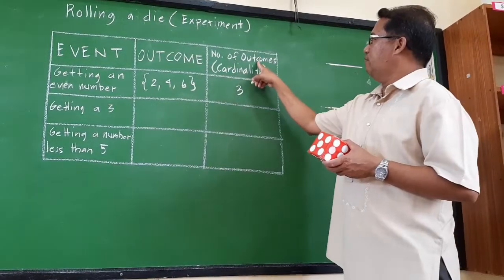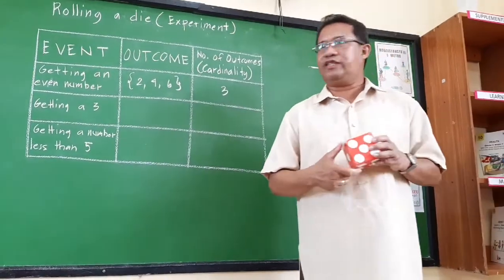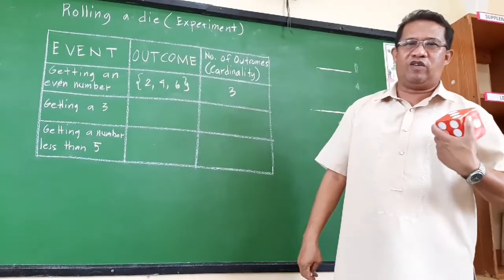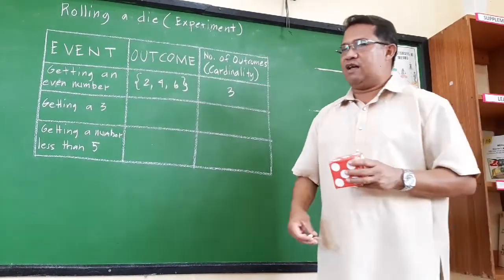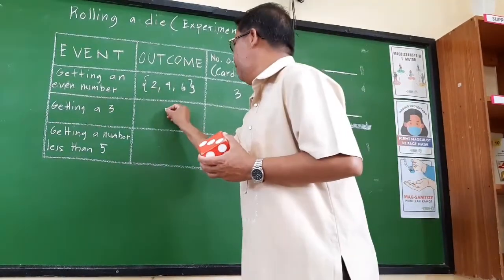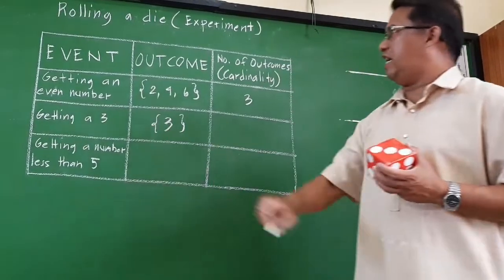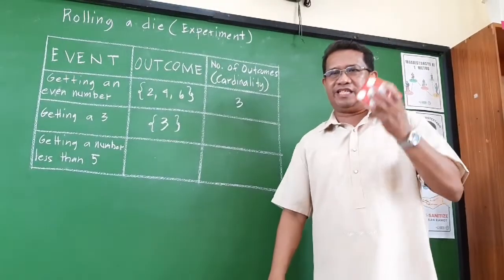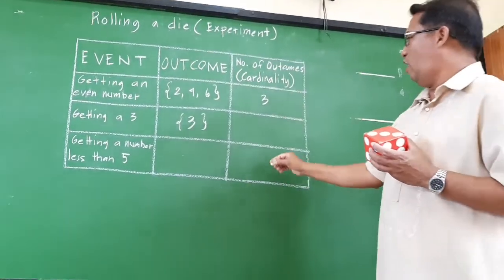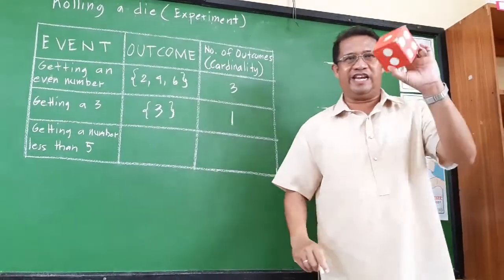The number of outcomes, or in other words, is called cardinality. How about in getting a 3? What is or are the outcomes? The outcome is 3. So in getting a 3, the possible outcome is 3, and the number of outcomes is only 1, because we have only one 3 on this die.